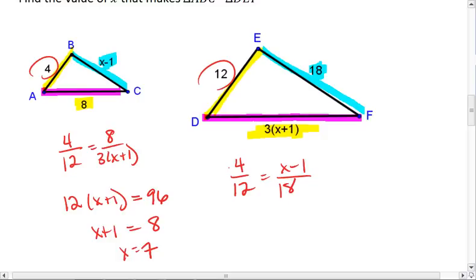I get 4 times 18. 4 times 10 is 40. 4 times 8 is 32, so I get 72. 12X equals 12X minus 12.